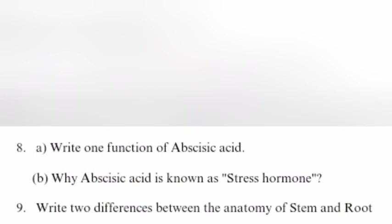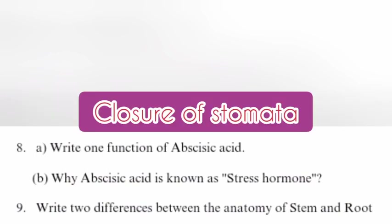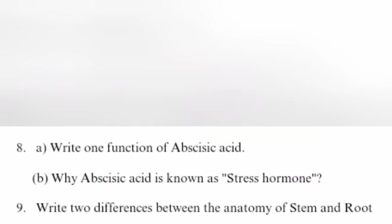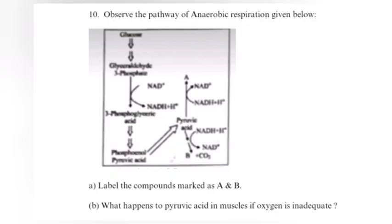Question 8B: Why is abscisic acid known as a stress hormone? Answer: Closure of stomata. Question 9: Write two differences between the anatomy of stem and root. Answer: Stem has conjoint and arc vascular bundles; root has radial vascular bundles. Question 10: Observe the pathway of anaerobic respiration given below. Label the compounds marked as A and B.